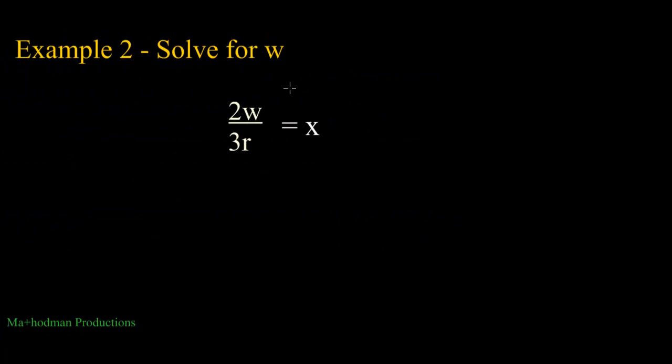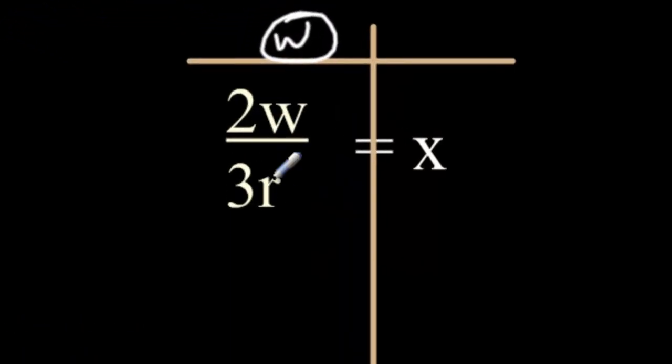Moving on to example 2, solve for w. If these are getting a little confusing, just remind yourself of the same inverse operations as a normal equation. Pretend that letters are just numbers.